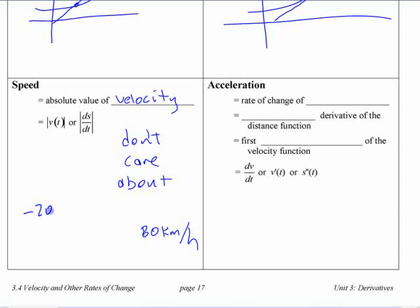If you have a speed limit, if your velocity is negative 200 kilometers an hour, your speed is 200 kilometers an hour. You don't care about the sign, right?